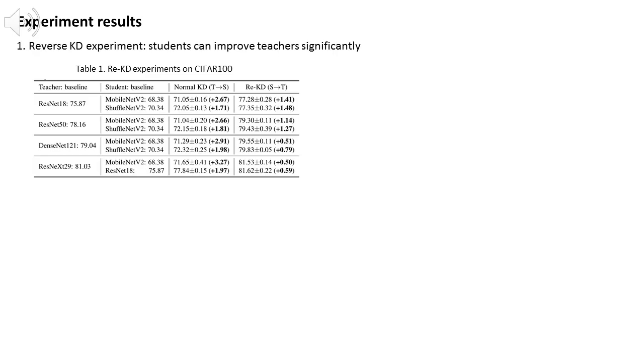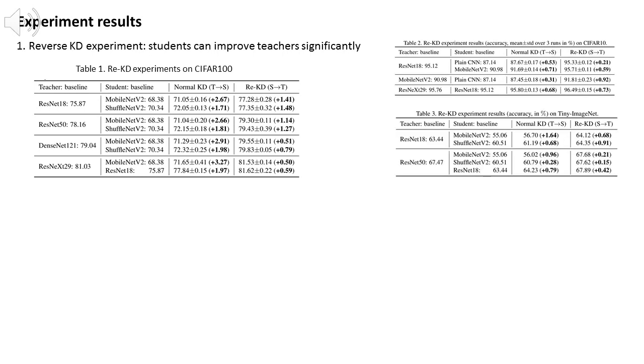However, after checking with many models and datasets, we found that for reverse KD, the student can improve the teacher model significantly. For example, on CIFAR-100, the four teacher models all be improved by the weaker student models. Similar results also happen on CIFAR-10 and Tiny ImageNet.